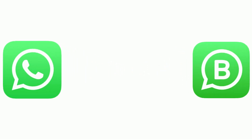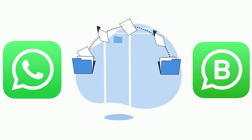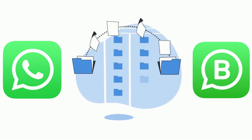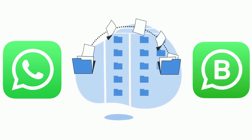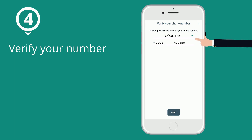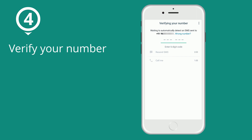If you choose the existing number, then you have an option to transfer the data as well. Now, you need to verify your number. Choose your country and enter your number. You will get a six-digit code to the number you have given. Once you enter it, the number will be verified.